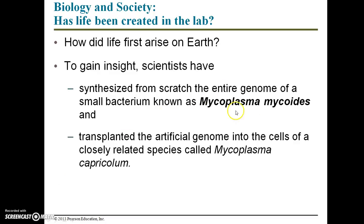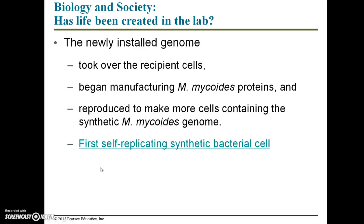Notice here we have two bacteria that are in the same genus. They share the genus name Mycoplasma, but the species name is different. The newly installed genome took over the recipient cells and it began manufacturing its own proteins. So despite the fact that it was transplanted into an M. capricola bacterial cell, it began manufacturing the proteins specified in that M. mycoides genome, and it also reproduced to make more cells containing the synthetic M. mycoides genome.